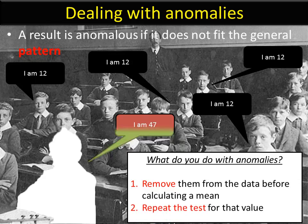The other option is just repeat the test. Maybe he is actually 12, he just said something wrong or you misheard him. So two options for anomalies: remove them or repeat the test for that value, not the entire test, just for that value.